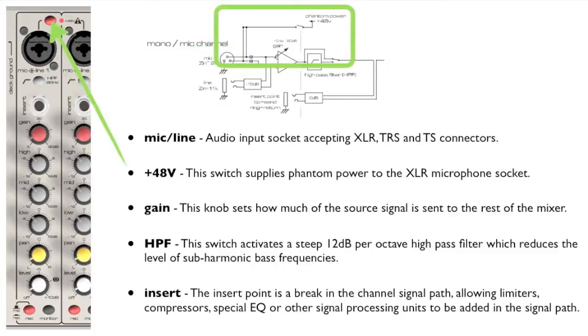There is a switch that provides phantom power to the XLR microphone socket. The signal passes through a preamp that is controlled by the gain knob. The preamp raises the signal to line level.